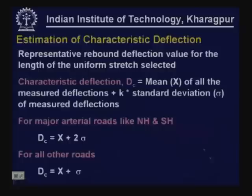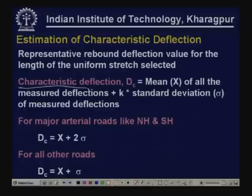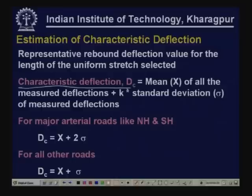On the basis of all deflection measurements taken over a uniform stretch, a representative characteristic deflection value is selected. This is obtained as DC = mean of all measured deflections plus a factor multiplied by the standard deviation. For major arterial roads such as national highways and state highways, characteristic deflection is mean plus two times standard deviation. For all other roads it is mean plus one standard deviation.